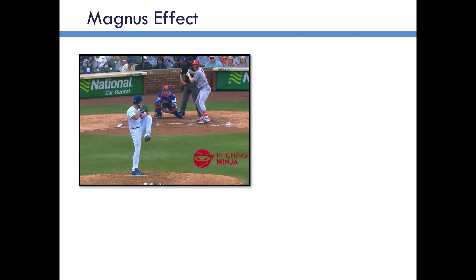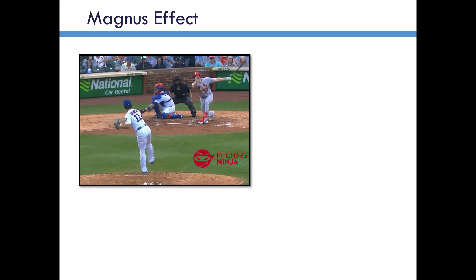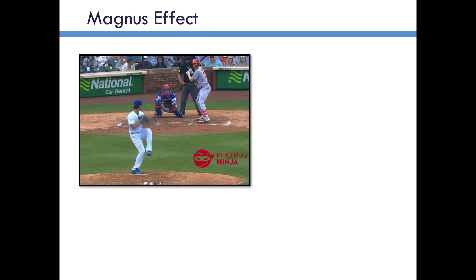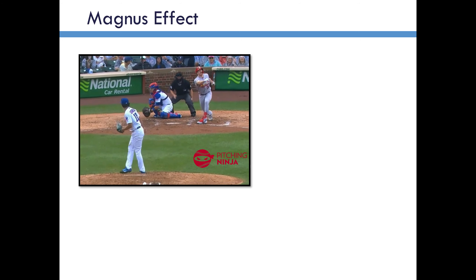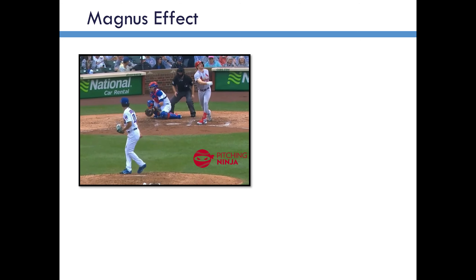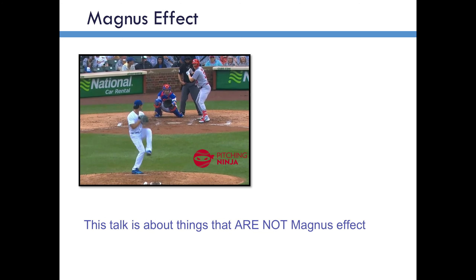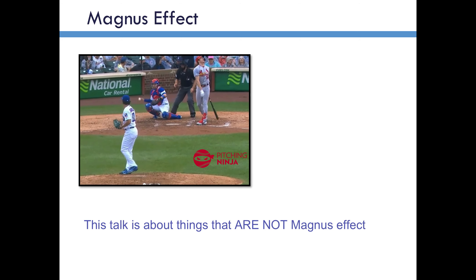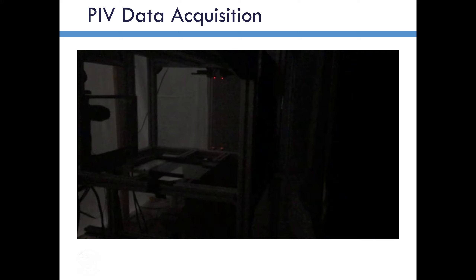Generally in baseball pitching, pitches are manipulated either by how hard they are thrown or the axis on which they spin, which is the main effect you're looking at with Yu Darvish — he's able to cause the baseball to spin on a different axis and therefore move in different directions due to the Magnus effect. But that's exactly what I'm not here to talk about. I want to talk about the possibility of manipulating baseball pitches using something other than the Magnus effect.